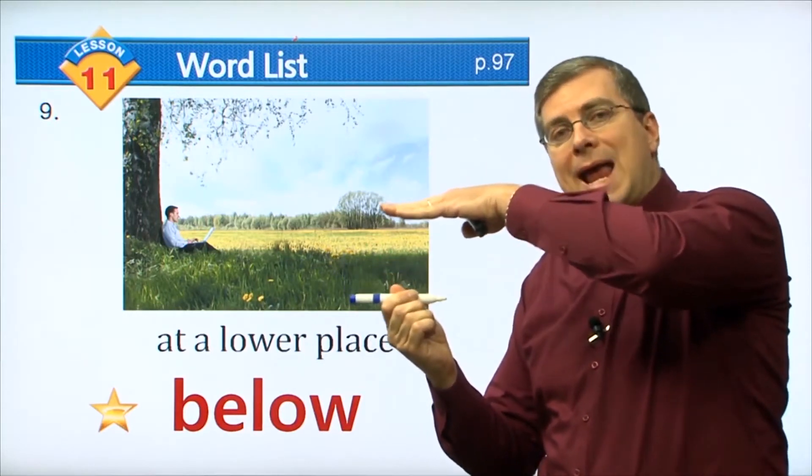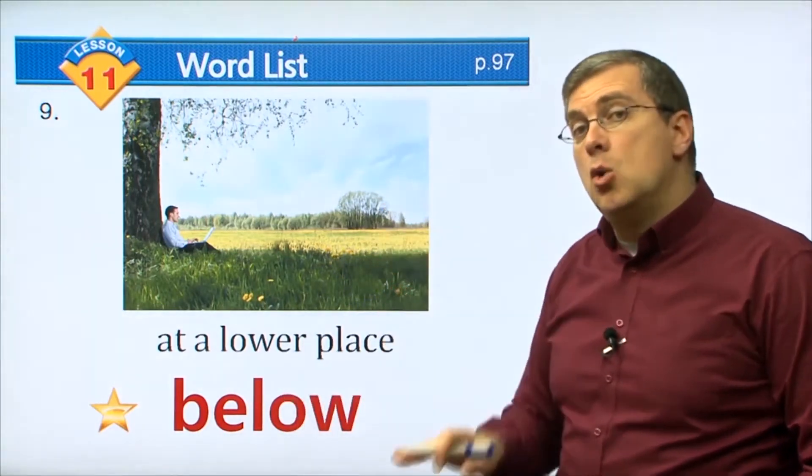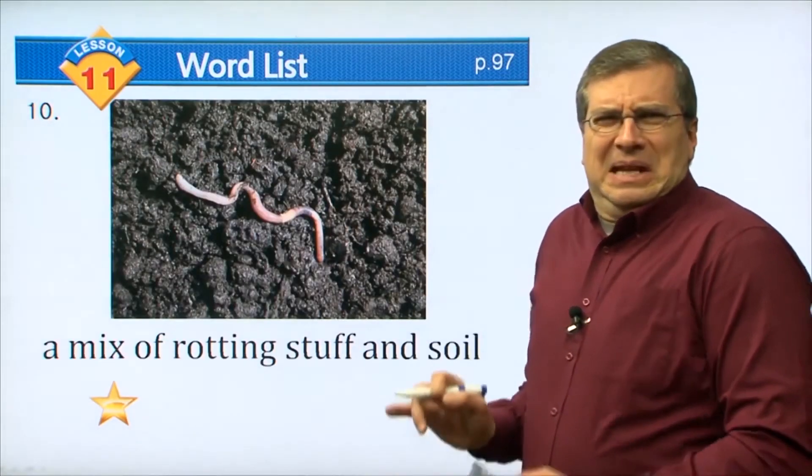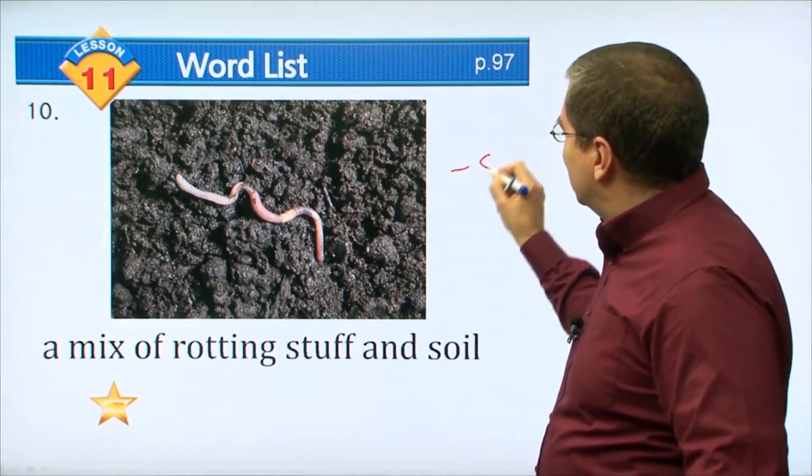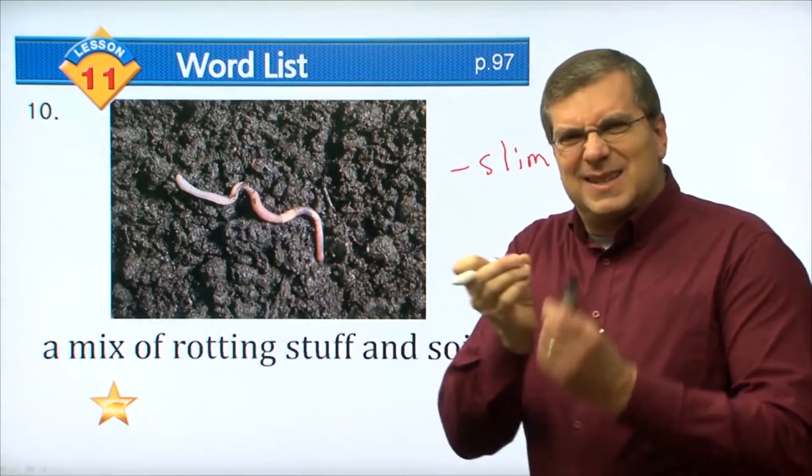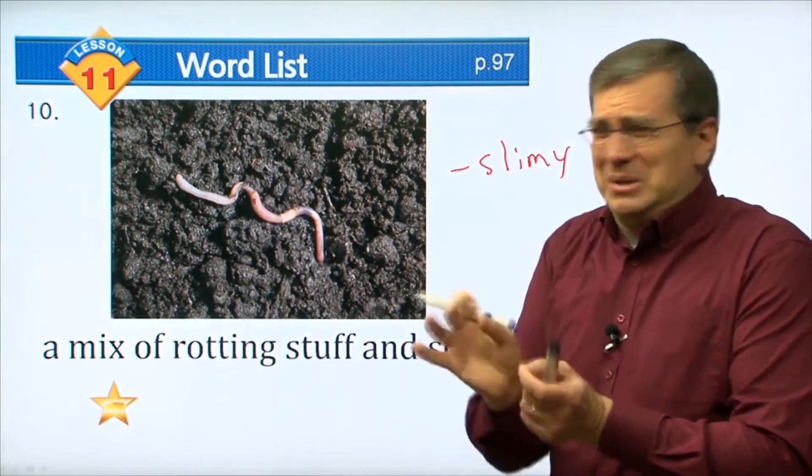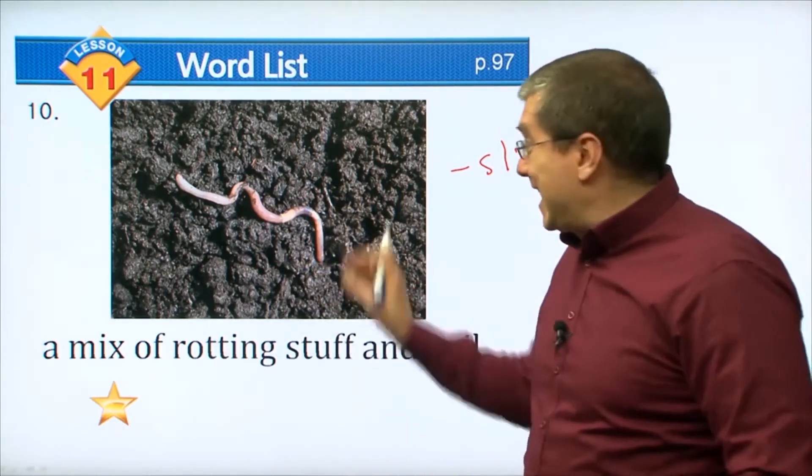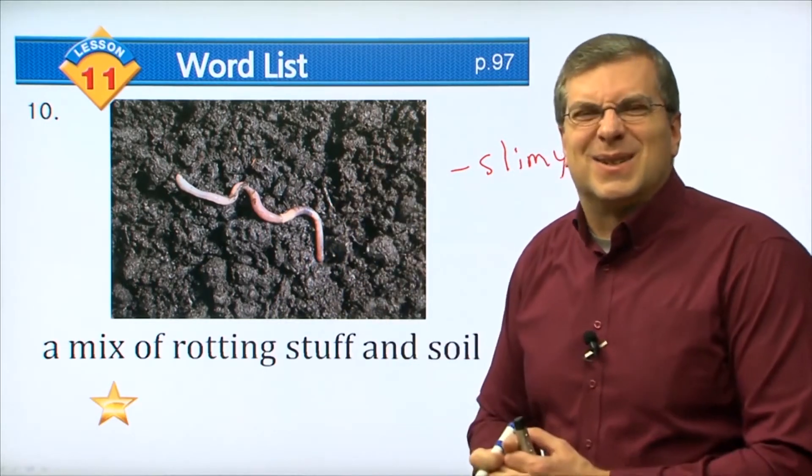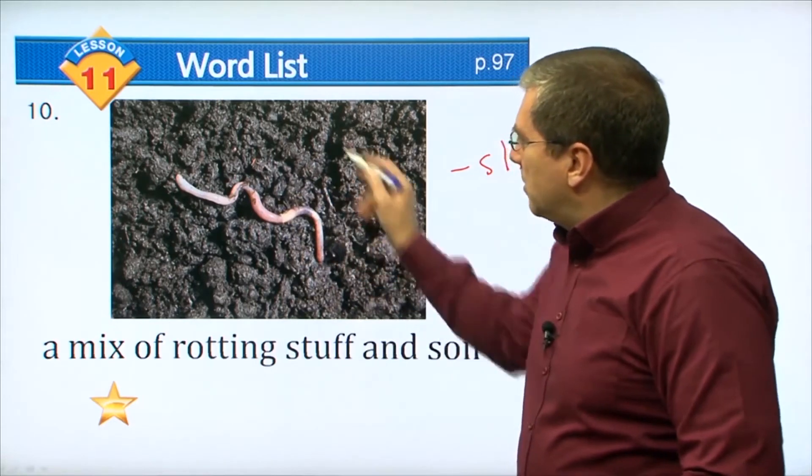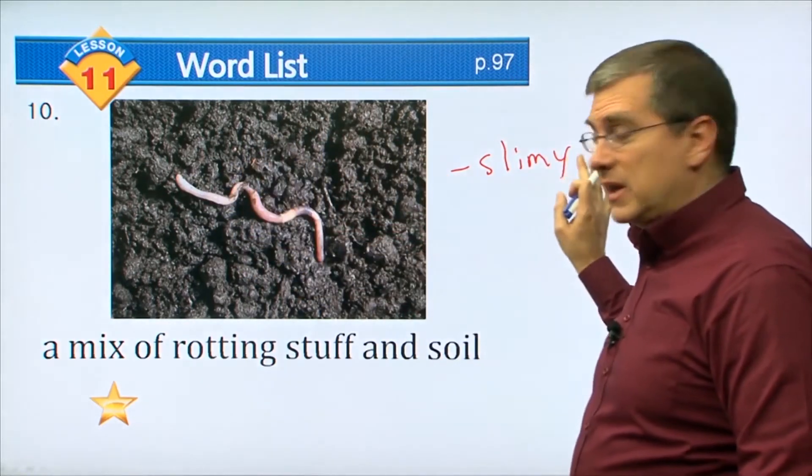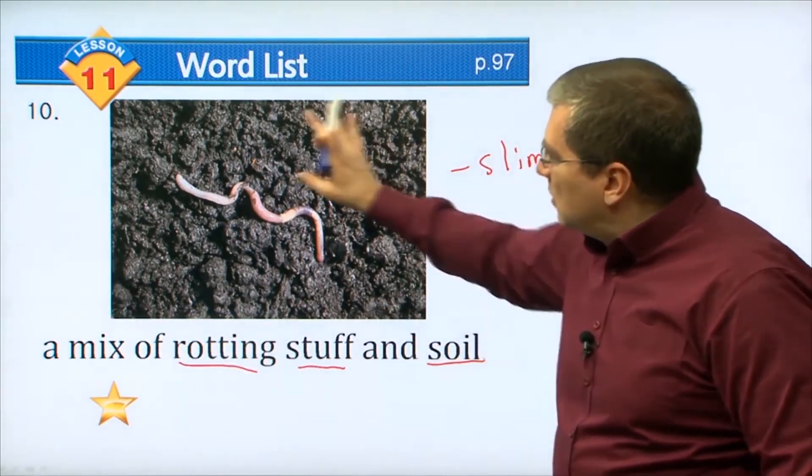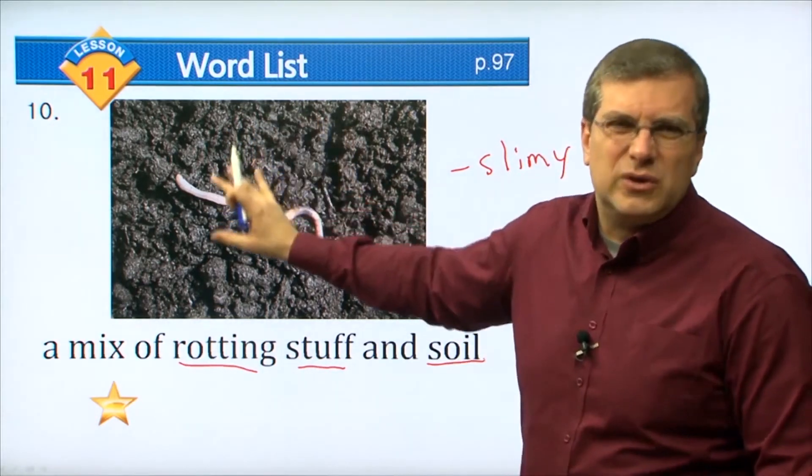Number ten. Kind of slimy, right? Slimy is, you know, a little wet and a little soft. Do you want to pick up that worm? I'm sure the girls in the audience don't want to pick up that worm. The boys are like, yeah, let's pick up the worm. But it's a little slimy. We can see this worm in the dirt, which is very wet, also slimy. When we see a mix of rotting stuff and soil - imagine there's old fruit on top, rotting and breaking down - it's a mix of that stuff and soil.